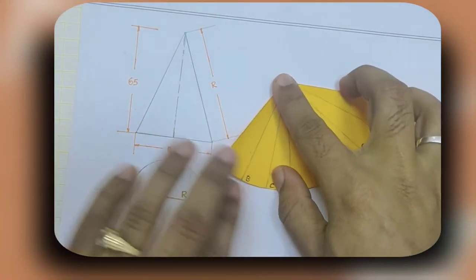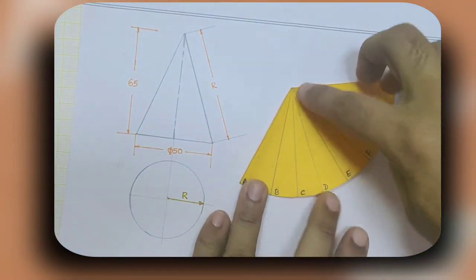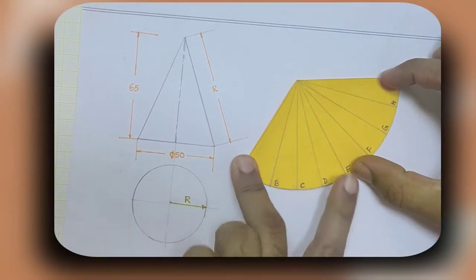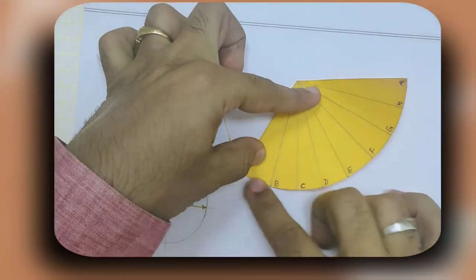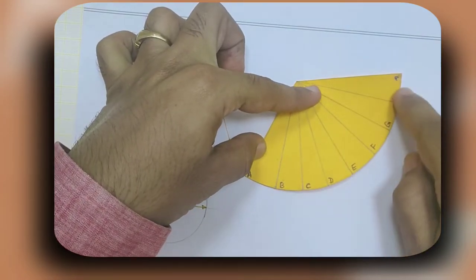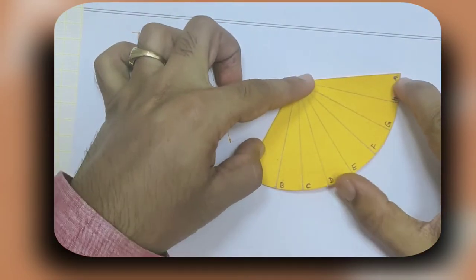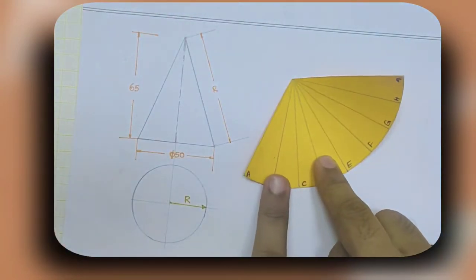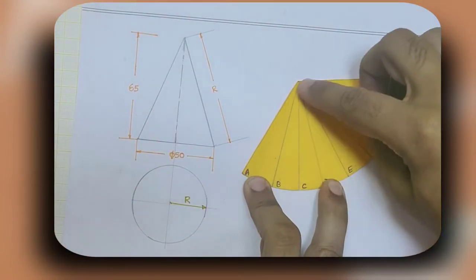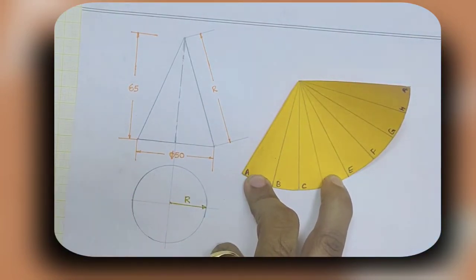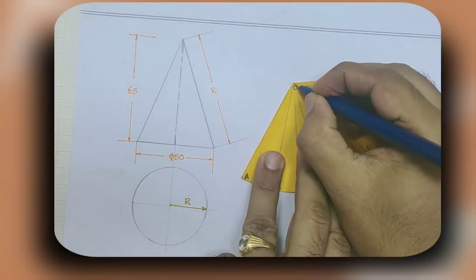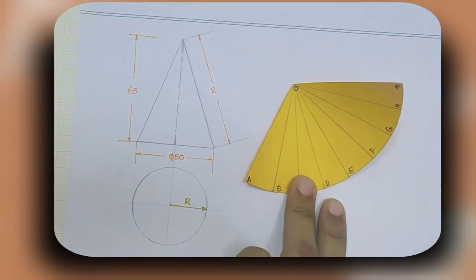This is a sector, and this length starting from A to the other point A is the total arc length, that is the circumference of the circle. The height here, starting from point O to A - let's say this is point O and this is point A.